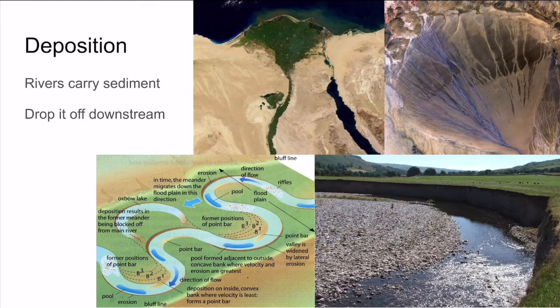Fast-moving water is a powerful agent of erosion. Water can wear away at surfaces and then transport that material downstream. In this way, rivers act somewhat like a conveyor belt for sediment. The materials carried by a stream are called the stream's load. There are three types: the bed load, which includes pebbles and boulders; the suspended load, where small rocks and soil are suspended in the water; and the dissolved load, where materials such as sodium and calcium are dissolved in the water.